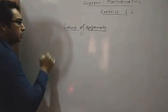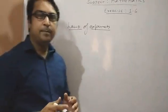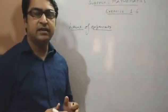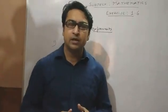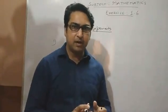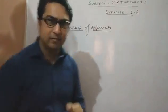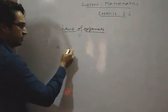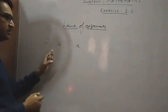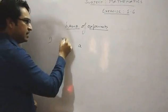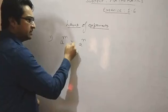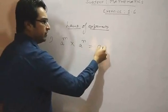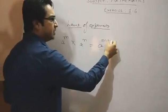Number 1: when the bases are same but the powers are different and there is a multiply sign between them, then we will add the powers and write the base one time. Here we see the bases are same but the powers are different, m and n, and there is a multiply sign between them. So we will add the powers, that is m plus n.